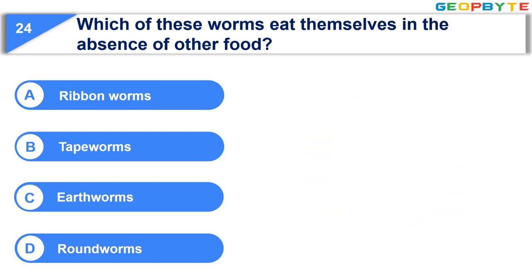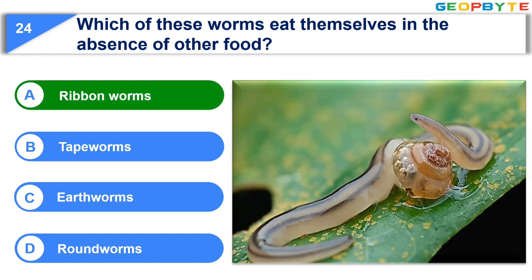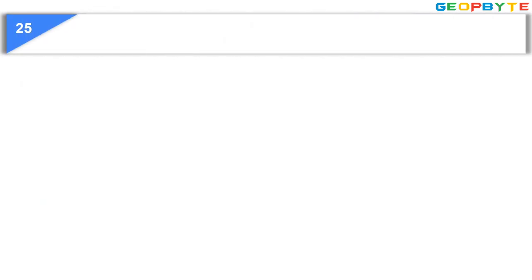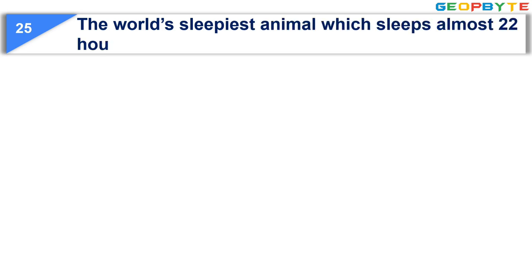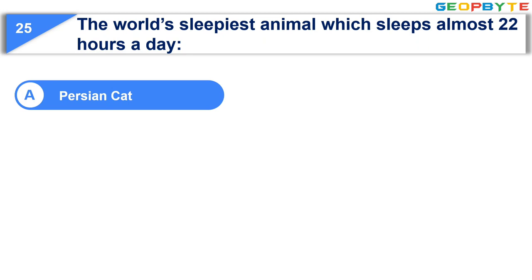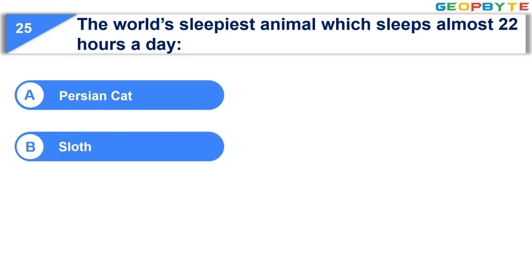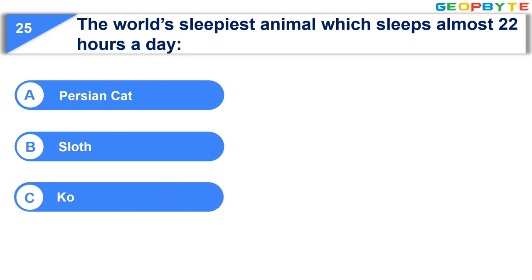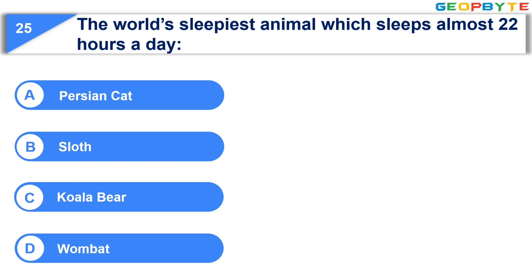Your time is up and the correct answer is Option A: Ribbon worms. Now let us see the last question: The world's sleepiest animal, which sleeps almost 22 hours a day — Option A: Persian cat. Option B: Sloth. Option C: Koala bear. Option D: Wombat. Your time starts now.